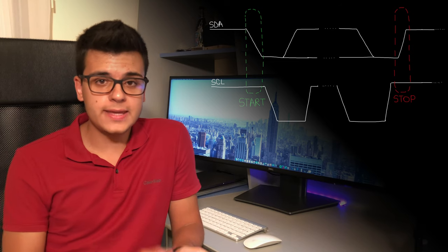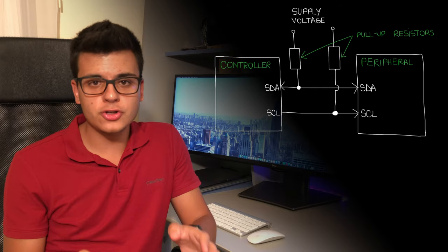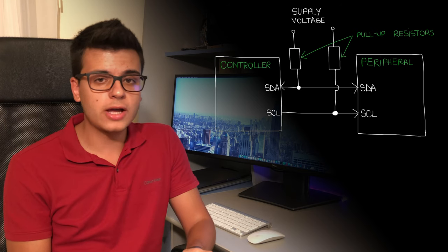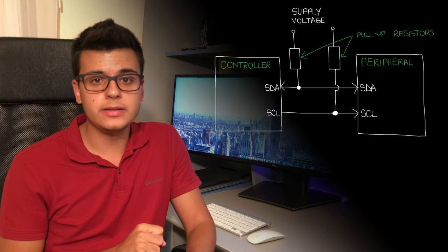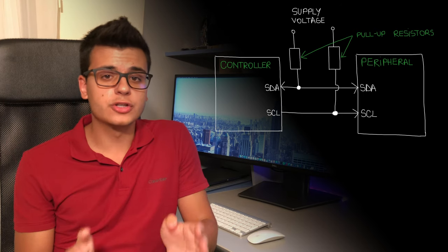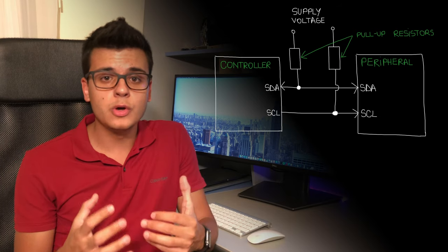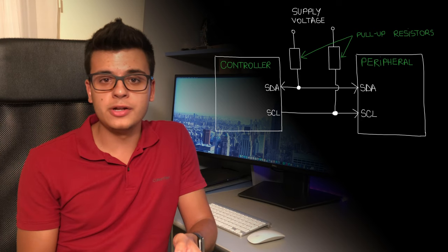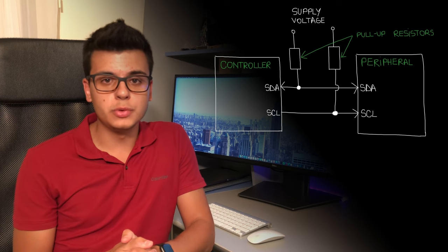During a normal data transfer, the SDA line is only allowed to transition when the clock line is low. Unlike UART or SPI, I2C is open drain, meaning devices can only pull the line low. The logical one idle states of both the data and clock lines are maintained through pull-up resistors connected between those lines and the supply voltage. These pull-up resistors allow any device to pull a line low without causing a short circuit between ground and supply.